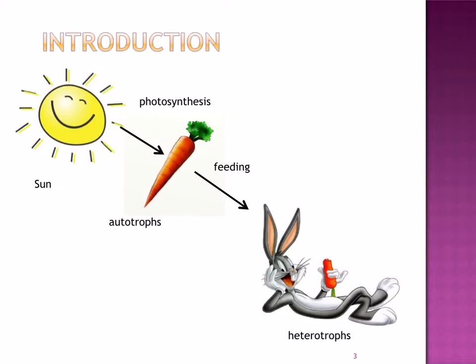All living organisms require energy. Where does this energy initially come from? As you can guess, it comes from the sun. Plants use solar energy in a process called photosynthesis and convert it into chemical energy. Both plants and animals then break down these organic molecules to make something called ATP, which is used as the energy source to carry out processes. Heterotrophs don't make their own energy — they need to feed on something else to get energy.